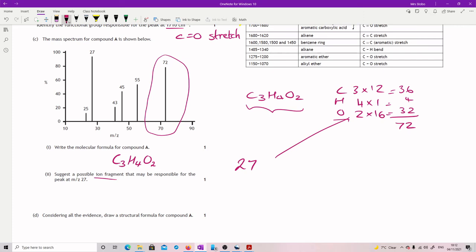Really, I'm thinking the most likely thing is that we take two carbons because that's going to give us 24. And then I just need three hydrogens in there to give me 27. So my ion fragment is just going to be C2H3 with a little positive charge.